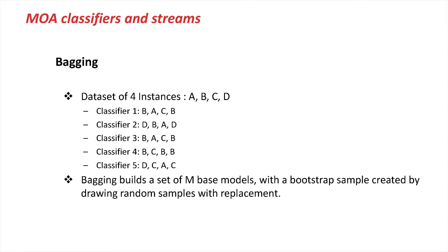Of course there's a little issue, and that is the way bagging distributes examples across the different classifiers. In the batch learning version you do bootstrap sampling with replacement. So in a simple example with a dataset comprising only four examples A, B, C and D, classifier 1 might see a sample like B, A, C, B, and classifier 2 might get D, B, A, D. An extreme classifier might actually get three copies of B and only one C, and never sees A or D. So how do we take this batch-oriented procedure like bootstrap sampling and turn it into something incremental?